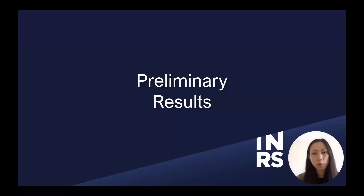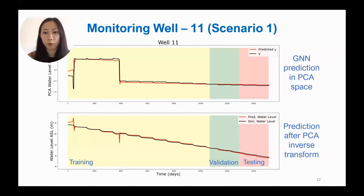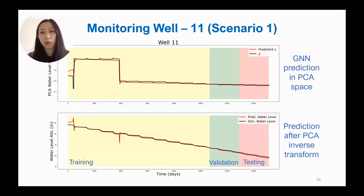Here I will show some preliminary results obtained from our workflow. We randomly selected one monitoring well and one pumping well. For scenario one — a gradual increase in pumping rate — the top plot shows the output from the graph neural network in PCA space, where red is the predicted value and black is the true label. The trends match quite well. We're not looking for exact predictions but rather for trends, and the trends match, which is acceptable.